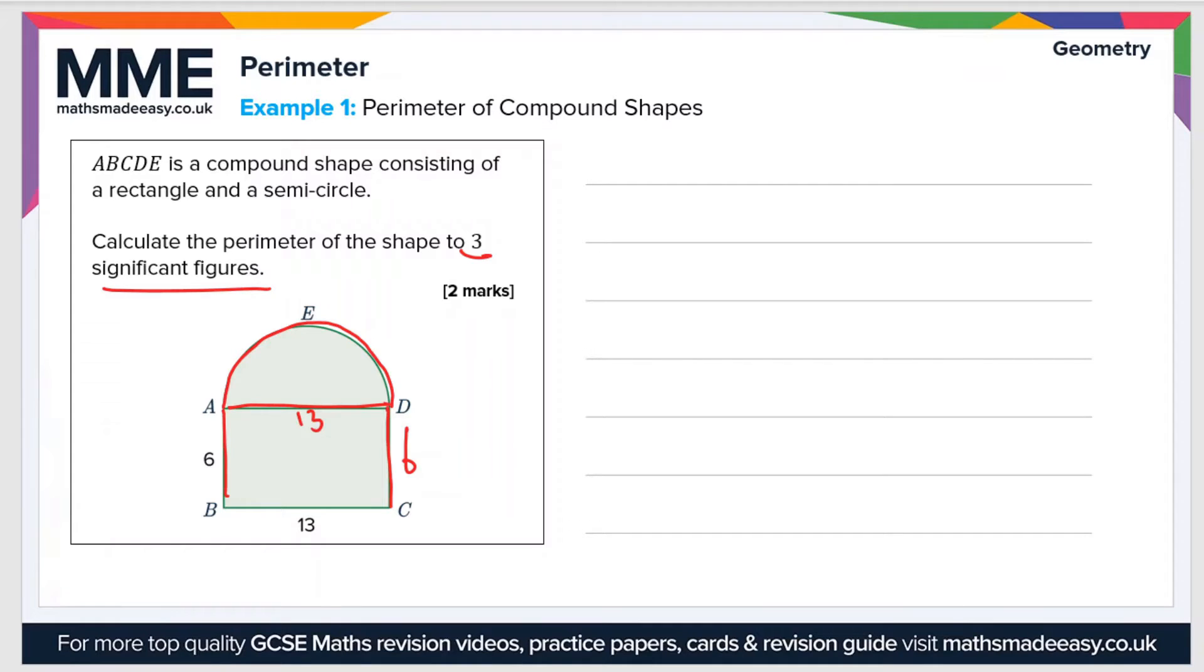The circumference of a circle is C equals pi D. Now D is the diameter, so if this was a full circle the circumference would be 13 times pi. But we don't have a full circle, we have a semicircle. So this distance is therefore half of this, which is 13 pi over 2, and that gives us a value of 6.5 pi for the curved side.